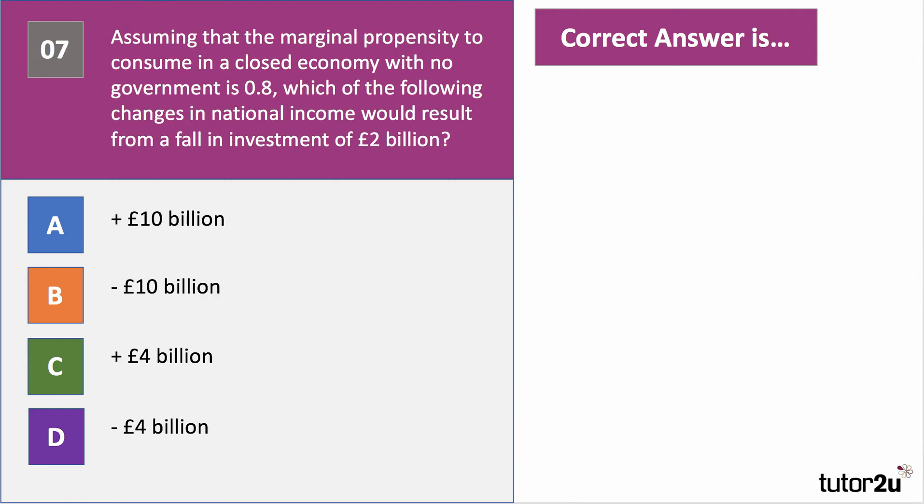Question seven. Assuming the marginal propensity to consume in a closed economy with no government is 0.8, which of the following changes in national income would result from a fall in investment of £2 billion? So — closed economy, no trade, exports or imports; no government, so no tax or government spending. Have a go at question number seven.